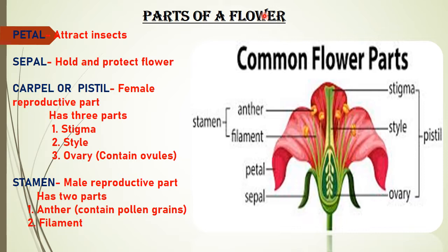Parts of a flower. A flower has the following parts: petal, sepal, carpel or pistil, and stamen.